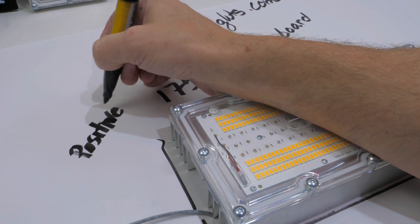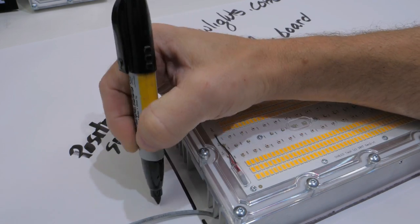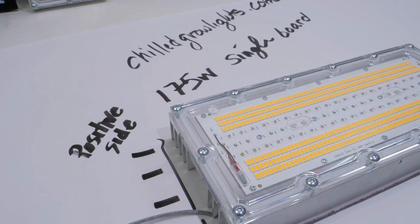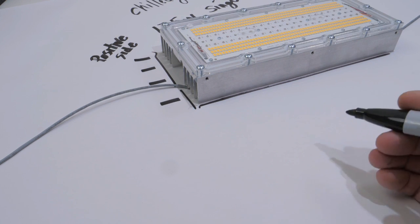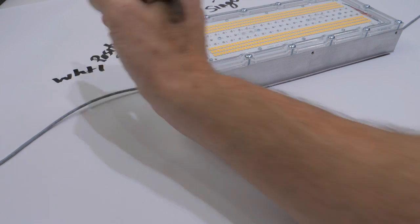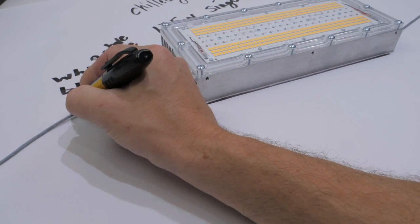Today I'm going to be covering the 175 watt chilledgrowlights.com chilled boards. Later I'll cover the quantum boards, and then we'll go into Vero 29s, Crees, Luminus, Citizen. It's all great, but these are the ones I want to focus here for summer 2017.